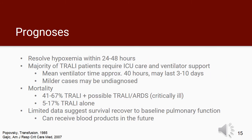TRALI prognosis can be poor, especially if hypoxemia is not corrected within 24-48 hours of discovery. The majority of patients diagnosed with TRALI will require ICU care and ventilator support, with a mean ventilator time of about 40 hours, though it may last up to 3-10 days. Milder cases of TRALI may progress undiagnosed. Mortality is estimated at 41-67% for TRALI and possible TRALI as a composite endpoint in the critically ill, and at 5-17% in patients with a general diagnosis of TRALI alone. Limited data suggests that surviving patients can recover to baseline lung function and receive blood products in the future.